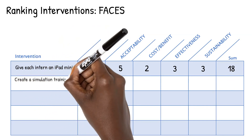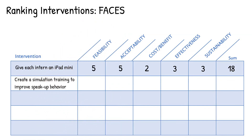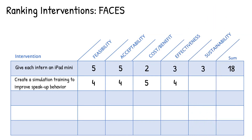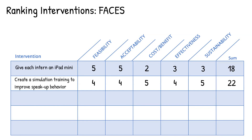If we look at a different intervention — creating a simulation training to improve speak-up behavior — we can see that it scored pretty well in feasibility, as the specific simulation scenario may not fully exist but should be pretty easy to develop. It scored pretty well in acceptability, as new interns will likely be okay with participating in a training, though there may be a bit of resistance. It scored high on cost-benefit, as effective training is more likely to outweigh the cost of developing the simulation. It scored high in effectiveness, as this type of training will likely teach the behavior. And it scored high in sustainability, because once the training is completed, it will be relatively easy to maintain every year. Overall, this intervention received a score of 22, which is better than the original intervention that received a score of 18.